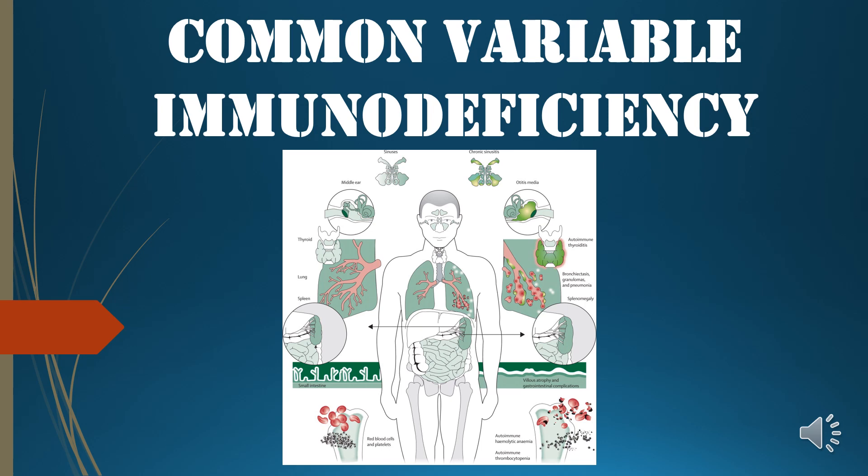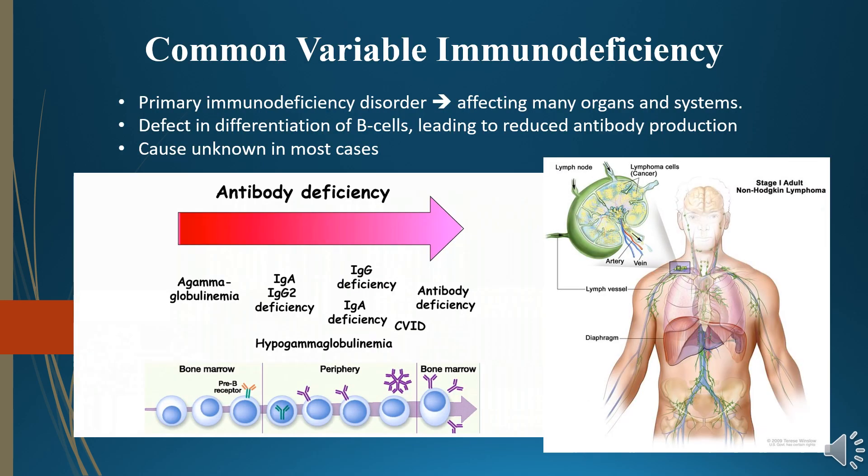This video covers common variable immunodeficiency. Common variable immunodeficiency is a primary immunodeficiency disorder that affects many organs and systems. It involves a defect in the differentiation of B cells, leading to reduced antibody production.